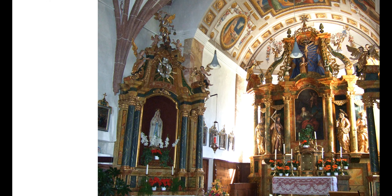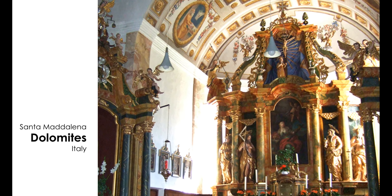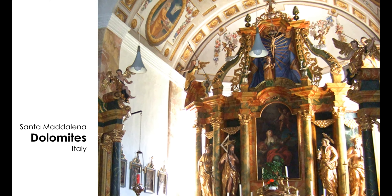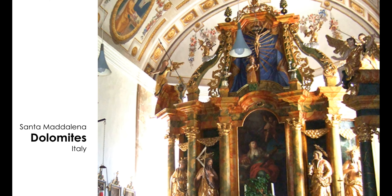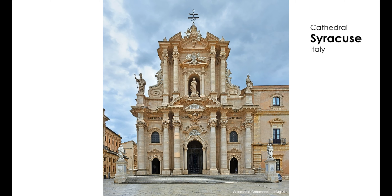Here we are in the world of classical architecture — we can see this immediately from the columns and the capitals, the pediments, the balustrades, the various statues. This is clearly the architecture handed down to us from ancient times, in the mold of the ancient Greeks and the Romans.